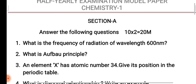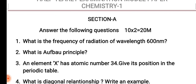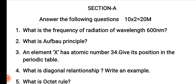First question: What is the frequency of radiation of wavelength 600 nanometers? This is from atomic structure. Next, second question: What is the Aufbau principle? This is from the periodic table. Third question: An element X has atomic number 34 — give its position in the periodic table.